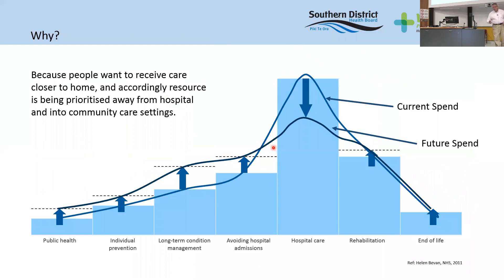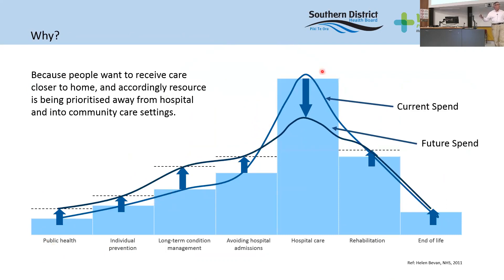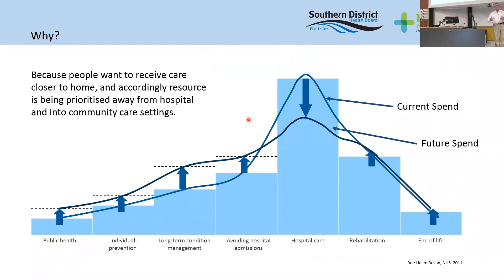If you look at these two graphs here, you can see the current model is where the money goes, and therefore the effort — because money in health is only a proxy for people, since about 70–80% of the money pays people. We have a big predominance of hospital. We want to work out what the opportunities are, what we can realise in terms of investing earlier — getting healthcare provided earlier in people's health journey to avert some of that, and leave us in a position where we're able to respond.